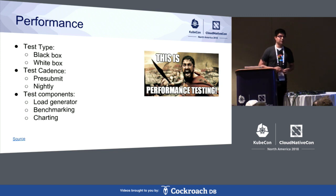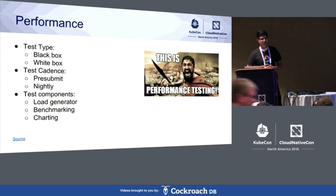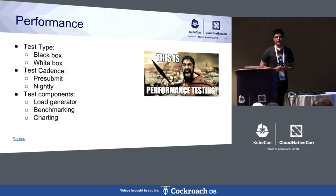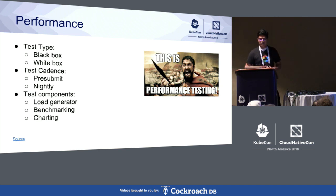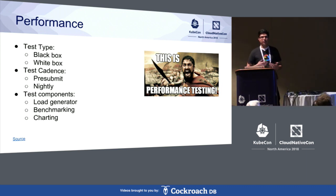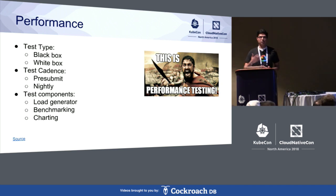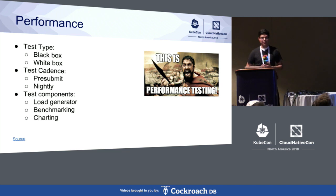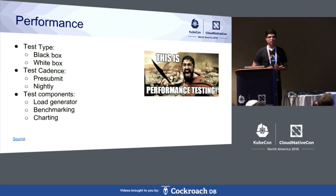For performance, we think of it in different types. Black box performance testing involves sending a bunch of QPS to an endpoint and testing how many 200s and 500s you get. For white box performance testing, we look at how the controller and different components emit metrics when handling those requests. These can run as pre-submits, nightly, or weekly. The different components we care about include load generators, benchmarking tools, and charting.